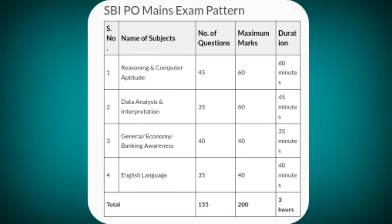Subject number 3: General Economy and Banking Awareness. Number of questions: 40. Maximum marks: 40. Duration: 35 minutes.